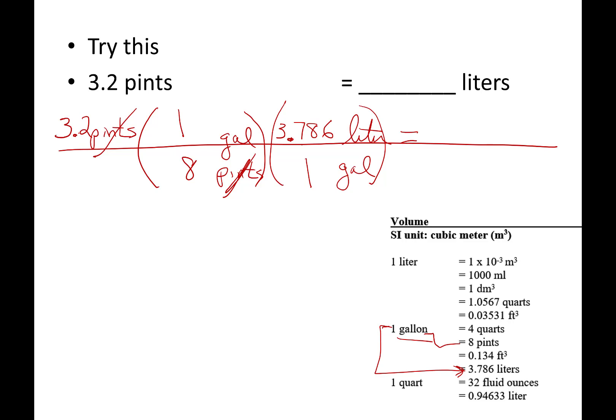So what I do is 3.2 divide by 8 equals, multiply by 3.786 equals. And when I did this, I got an answer of 1.514 liters. And I started with two digits, and I'm going to round this to two digits, 1.5 liters.